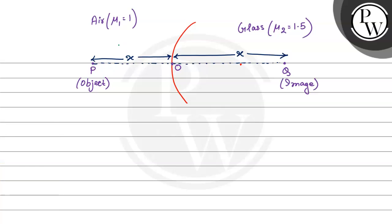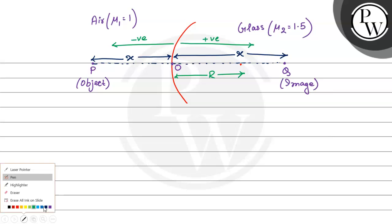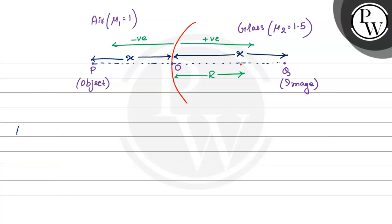Looking at the object distance: it is placed on the left-hand side, so it is taken as negative. The image distance is on the right-hand side, so it is taken as positive. The radius of curvature of the spherical surface is R. The key concept here is refraction through spherical surfaces.